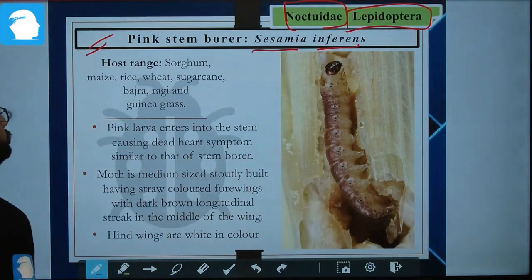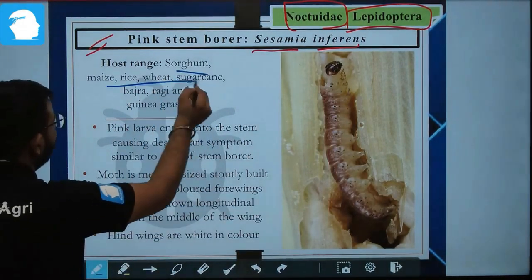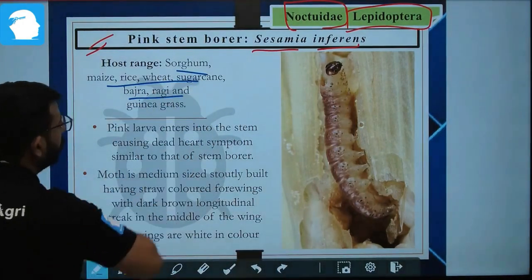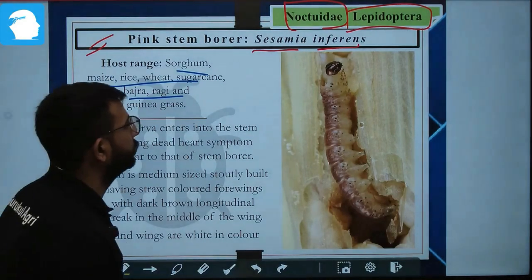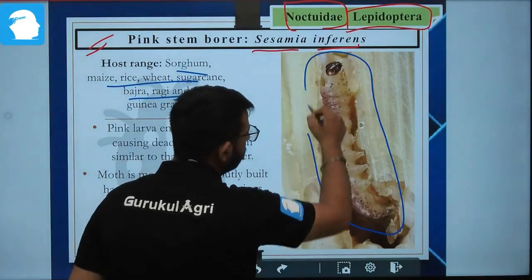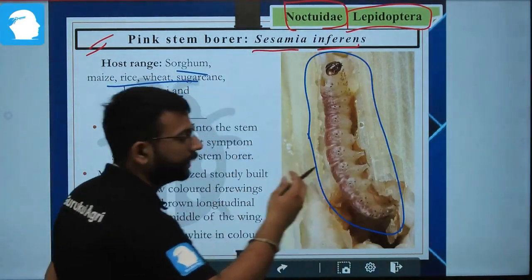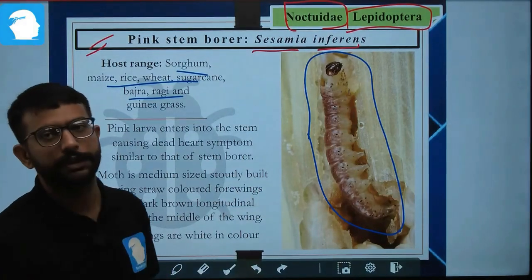Talking about the host range, pink stem borer will basically affect sorghum, maize, rice, wheat, sugarcane, bajra, and ragi. The larvae are pink in color and bore into the stem.